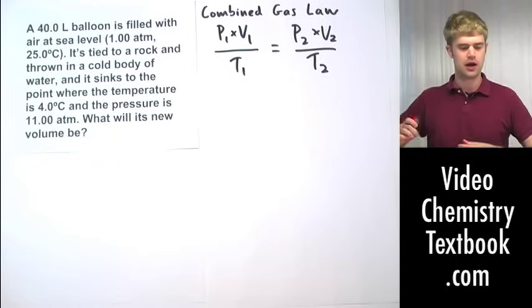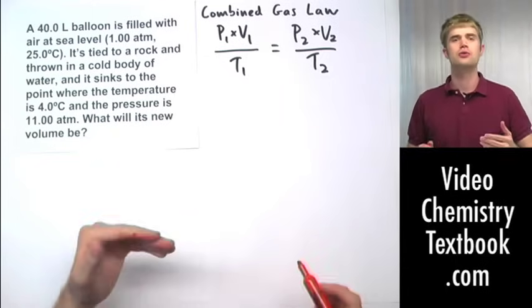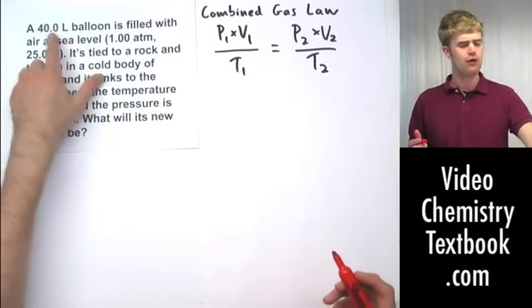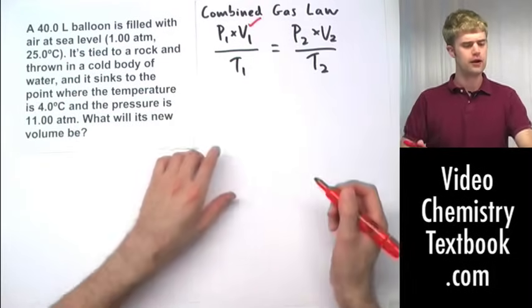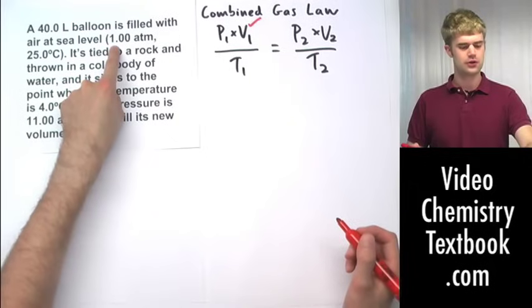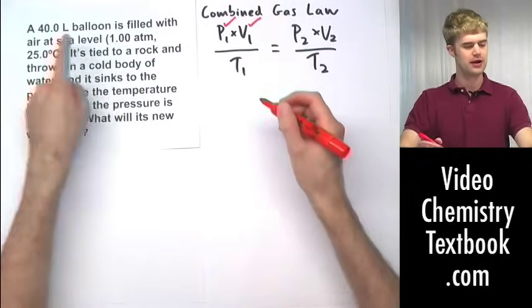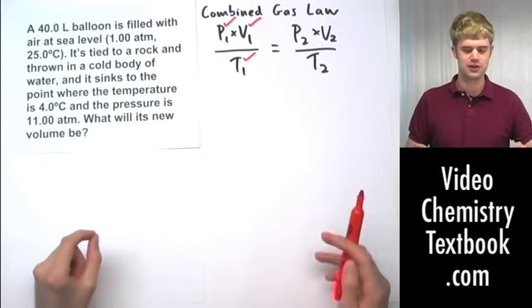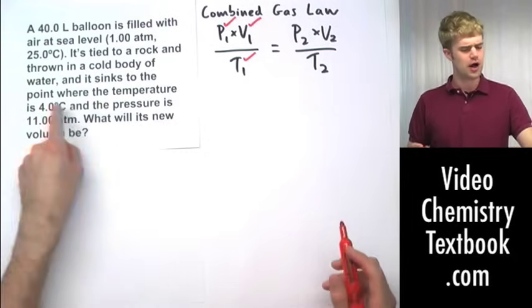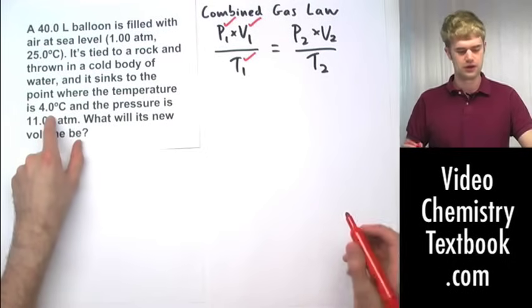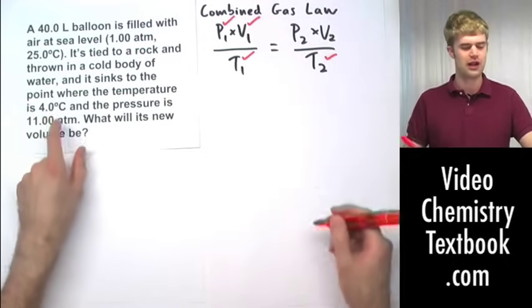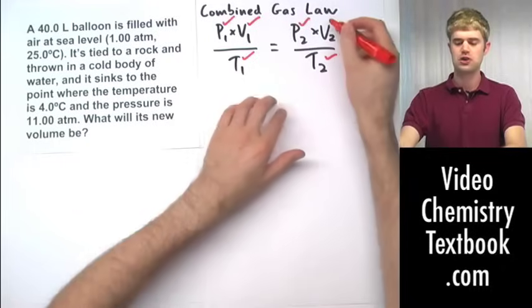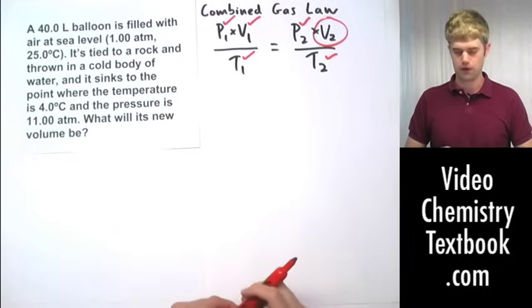So I'm going to use this combined gas law to figure this out. First, let's look at the variables that we already have, and the variables that we're going to need to solve for. A 40 liter balloon, that is V1, is filled with air at sea level. So sea level pressure is 1.00 ATM, and the temperature is 25.0 degrees Celsius. But remember, we're going to have to convert that to Kelvin temperature, because we're dealing with gas. It sinks to the point where the temperature is 4 degrees Celsius, so we have T2, although we'll have to convert it to a Kelvin temperature, and the pressure is 11.00 ATM. So that means that we have P2. What we're going to be solving for is V2. What will its new volume be?